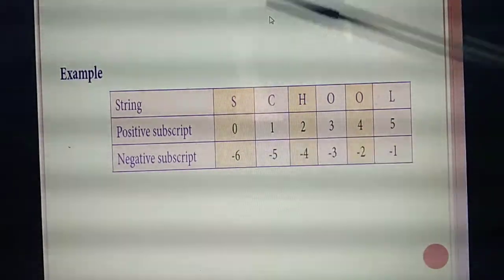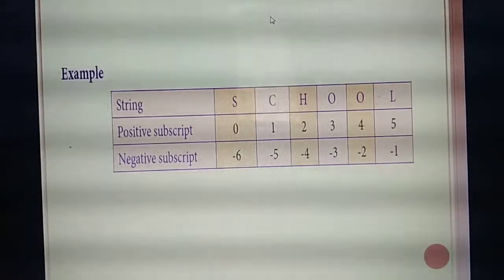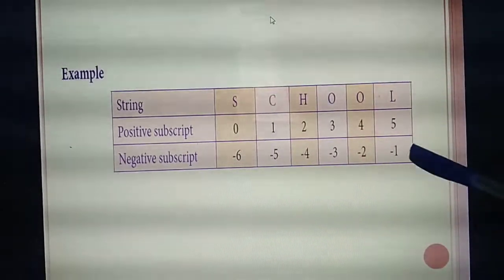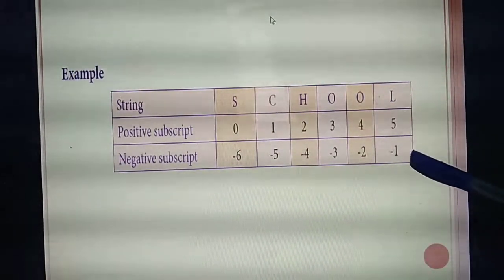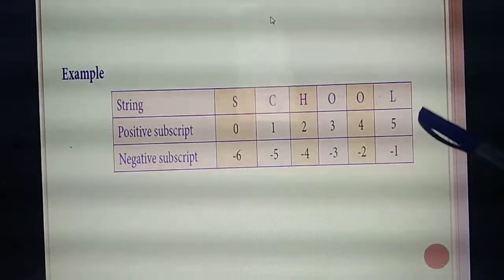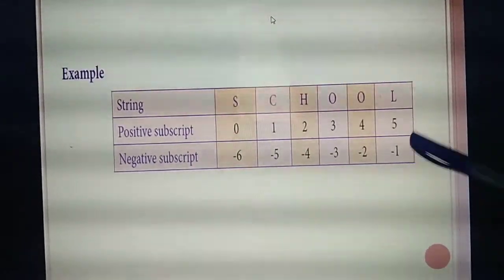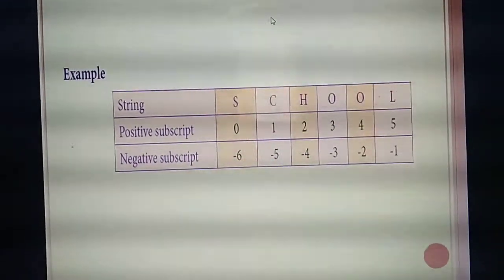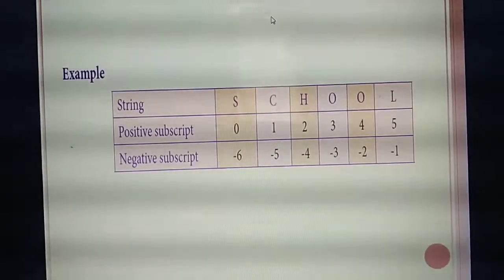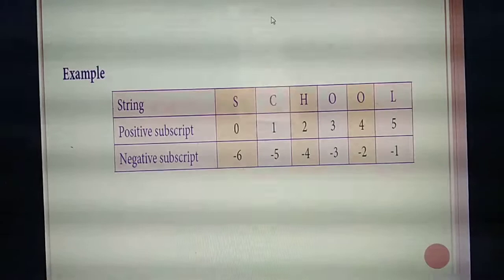See the output. After running the program, you get 'enter a string'. Here you enter the word 'welcome'. The program prints 'subscript of 0: w', then index plus one, 'subscript of 1: e', and so on, till the last character — from index zero to six, it prints all characters of 'welcome'. This is the program example for positive subscript.